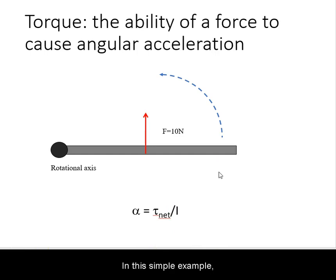In this simple example, you have a uniform object fixed to a rotational axis and a force acting on the object away from the rotational axis. This will have a tendency to rotate the object.